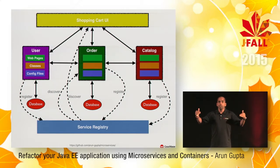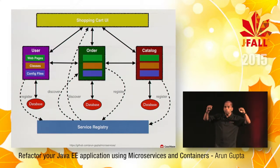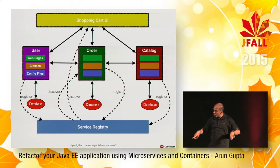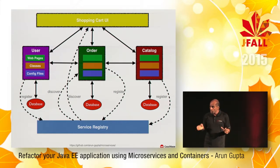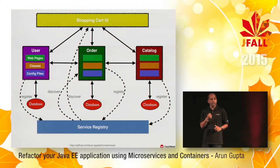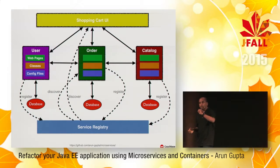What matters is they are published at a URL. How does that URL get identified by the shopping cart UI? As the services come up, they register themselves into a service registry. Each service, when it comes up, registers to the service registry. When the shopping cart UI is coming up, it queries the service registry, picks that service URI, and invokes it. The service registry is purely for getting the URI but not used at runtime.